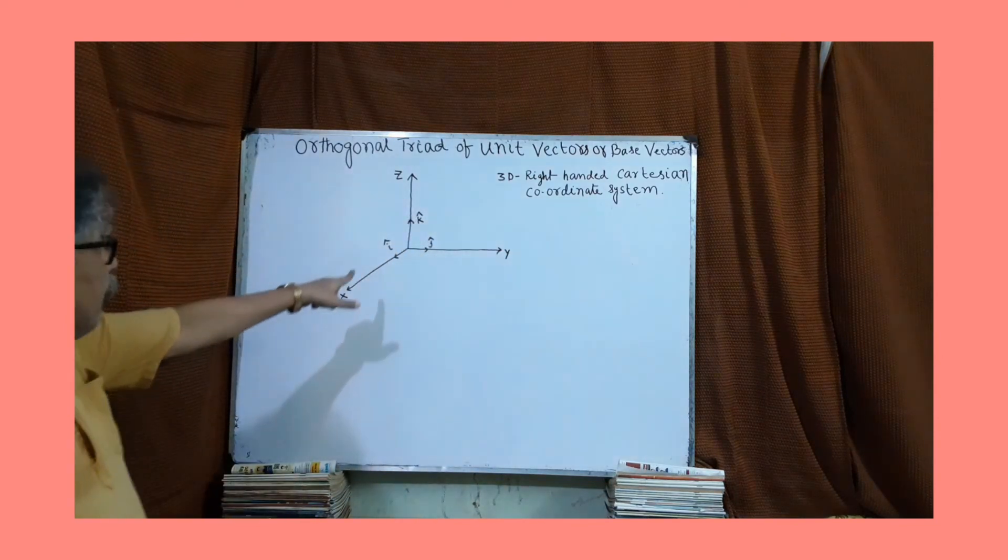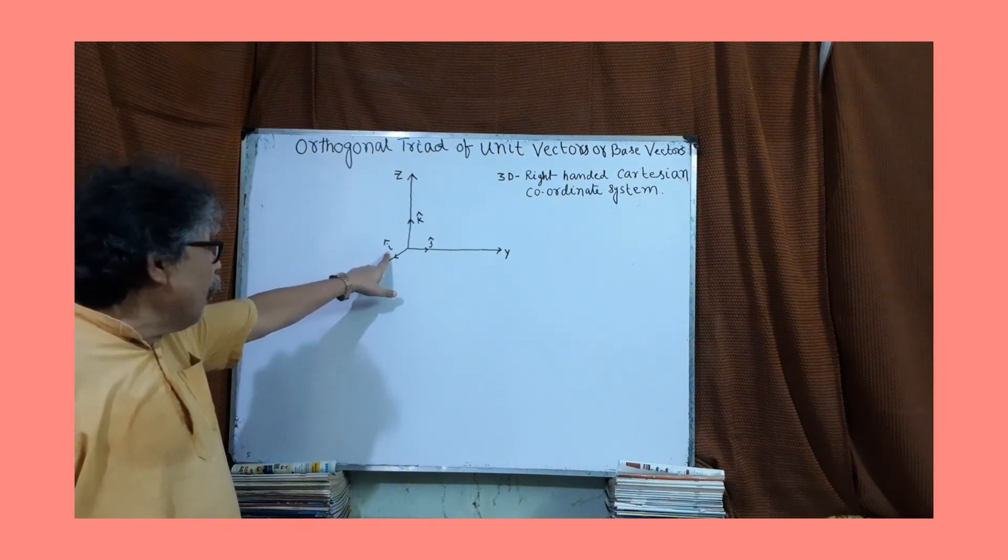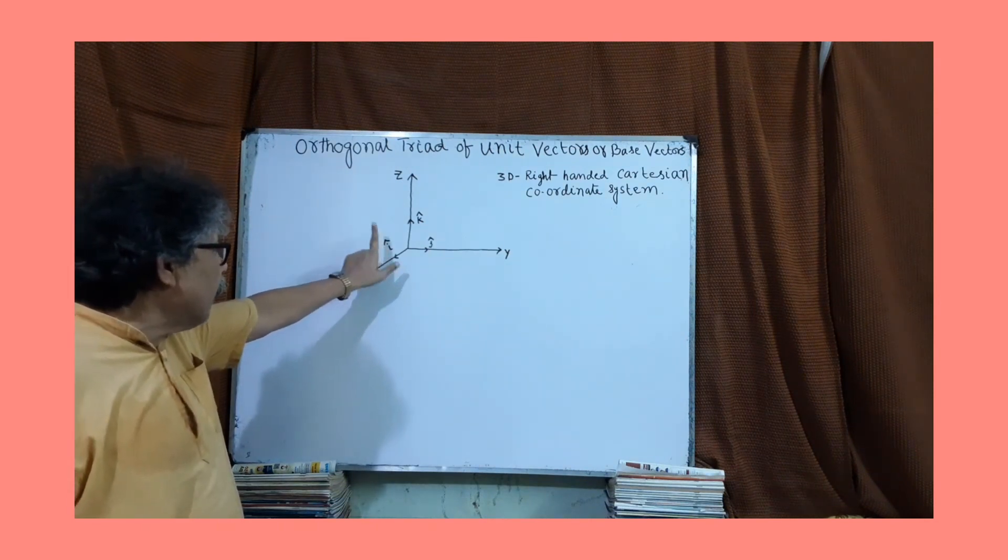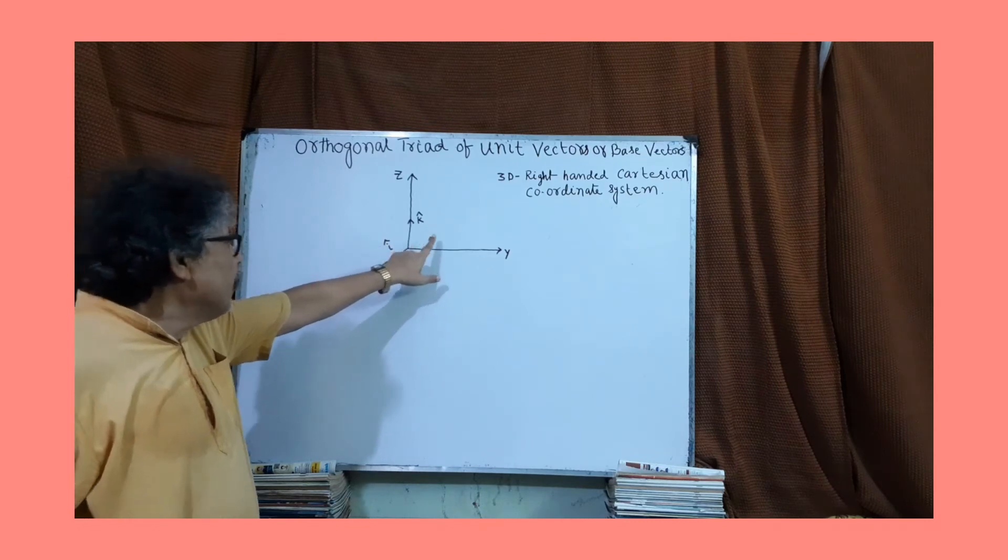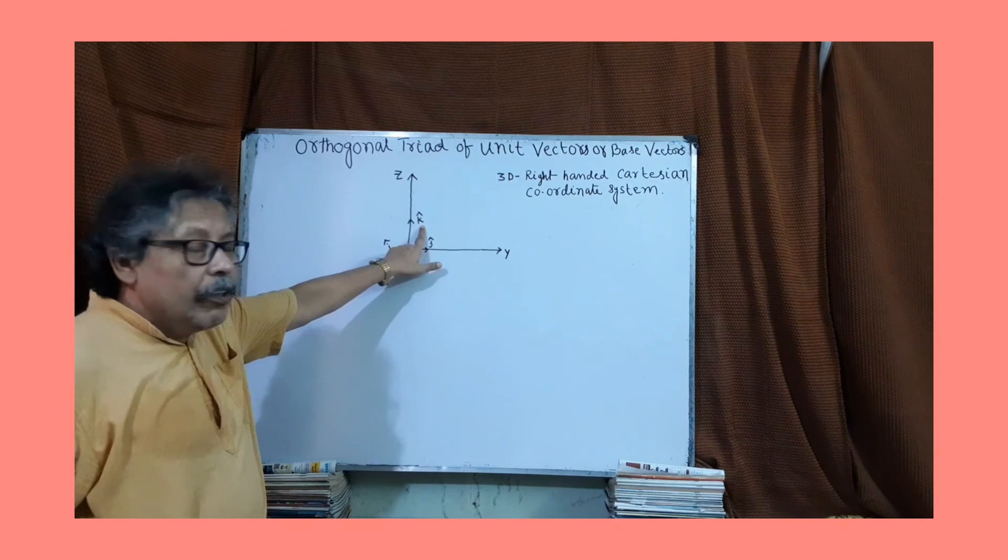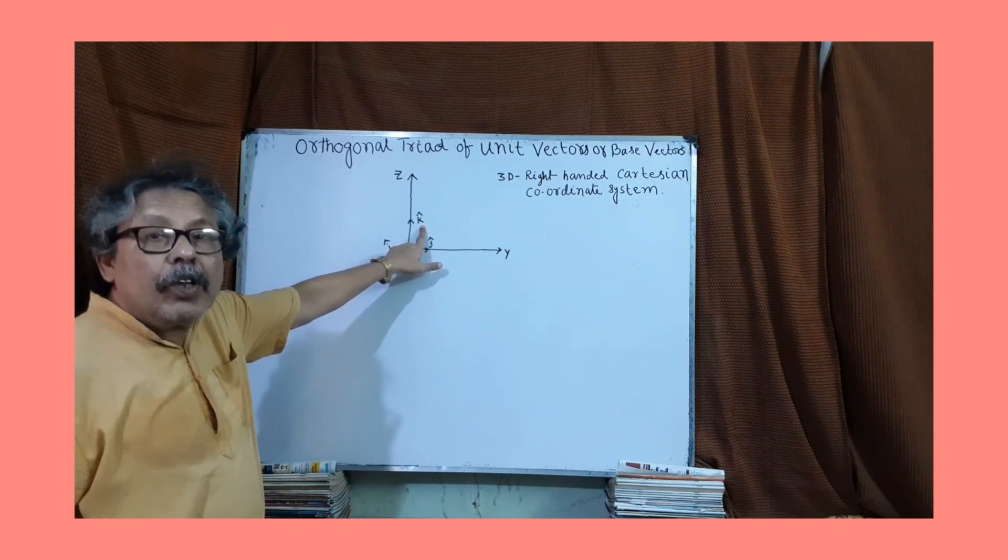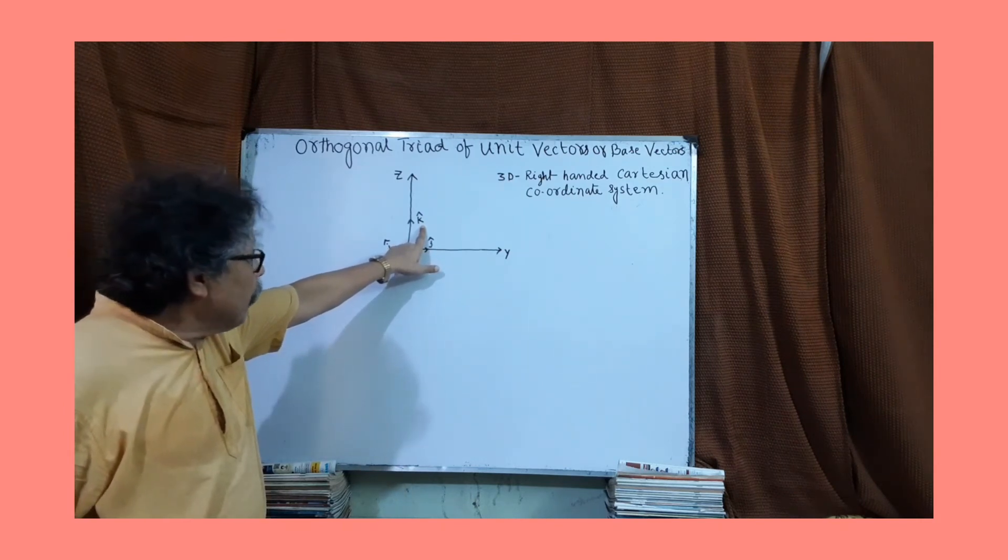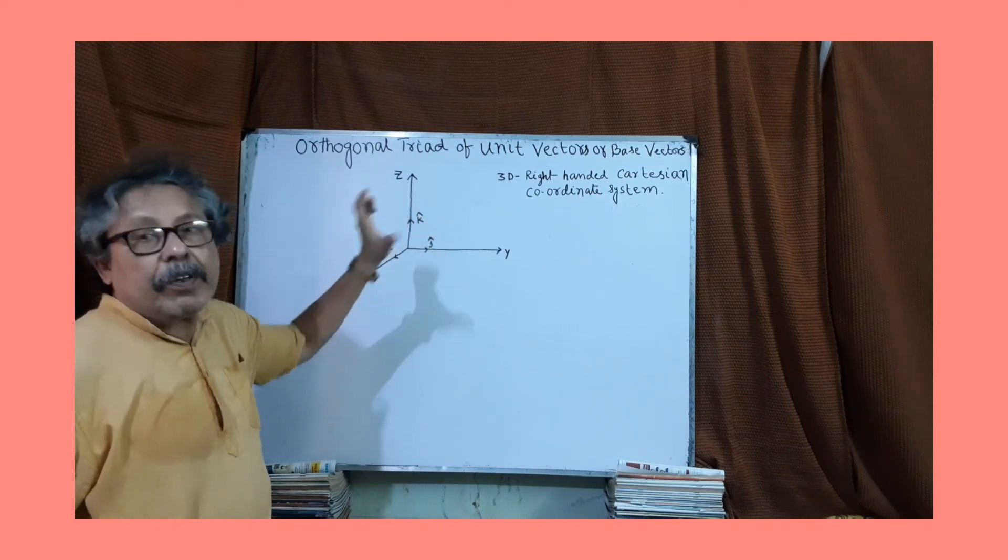These three unit vectors along x, y, and z-axis - i-cap, j-cap, and k-cap - is called orthogonal triad of unit vectors or base vectors.